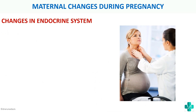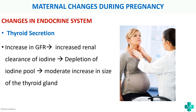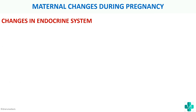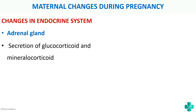Another endocrine change involves the thyroid gland. There is an increased GFR during pregnancy, which causes increased renal clearance of iodine, depleting the iodine pool. This leads to a moderate increase in size of the thyroid gland — a goiter — during pregnancy, unless there is proper iodine intake. So increased GFR → increased renal clearance of iodine → depletion of iodine pool → thyroid enlargement.